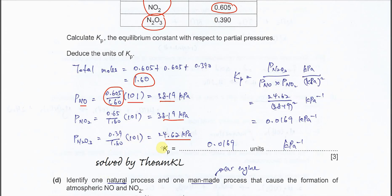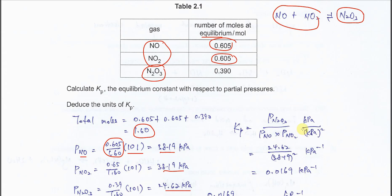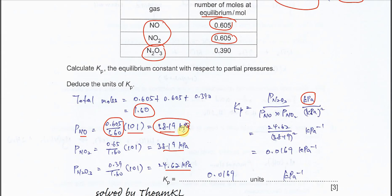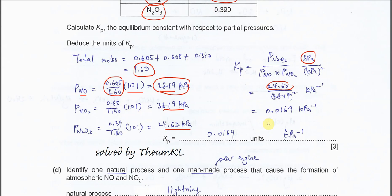Once you get all the partial pressures, you can substitute into the Kp expression. The Kp expression follows the equilibrium: product over reactants, partial pressure of products over partial pressure of reactants. So it's partial pressure of N2O3 over partial pressure of NO times partial pressure of NO2. To find the unit, here is kilopascal, here is kilopascal squared, so you get per kilopascal. Substitute the values: 24.62 over 38.19 squared. You get 0.0169 per kilopascal.